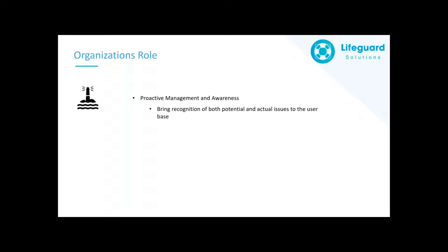Taking a look at an organization's role, we've broken this down into three distinct areas. First is proactive management and awareness — bringing not only recognition of issues that are coming, but making sure that individuals are aware not only of what their responsibility is, but also how we ensure that we minimize and mitigate whatever risks there may be to our employees, and how we ensure that at the end of the day we're taking as much individual care as possible for someone to feel safe within their environment.